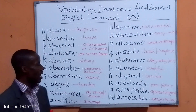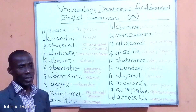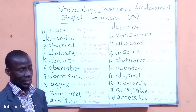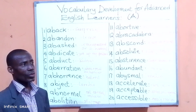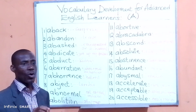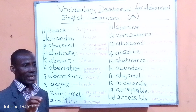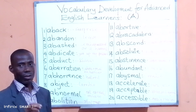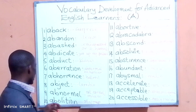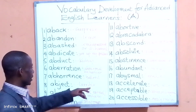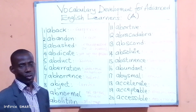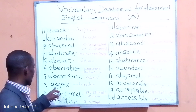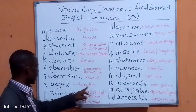Abhorrence comes from the word 'abhor,' which means hate. For example: 'It was an abhorrent sight.' Abject means terrible. For example: 'The situation was very abject.'